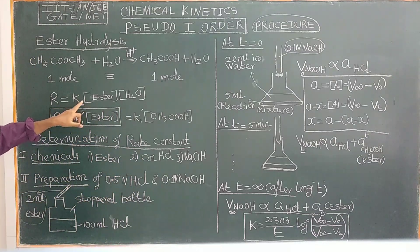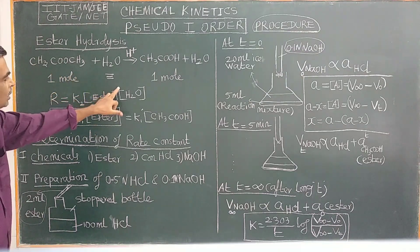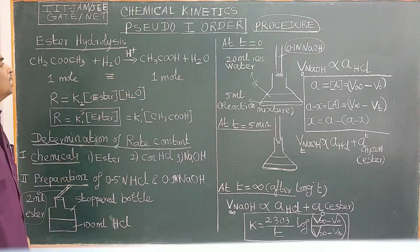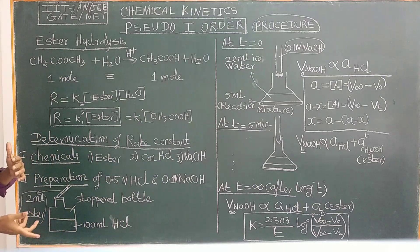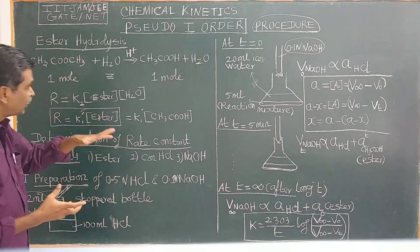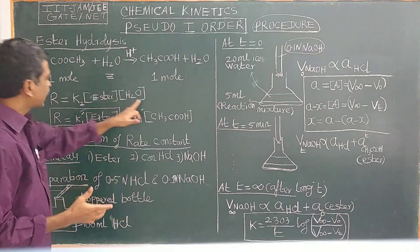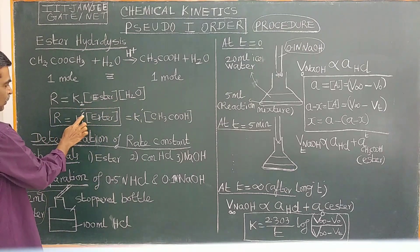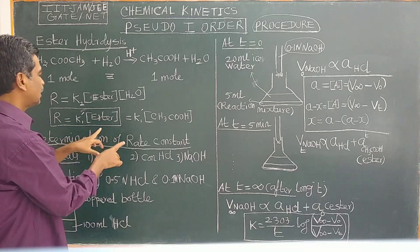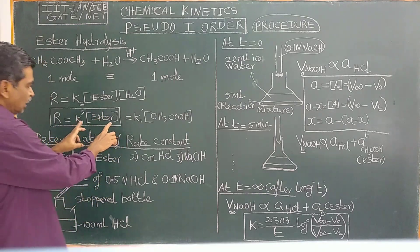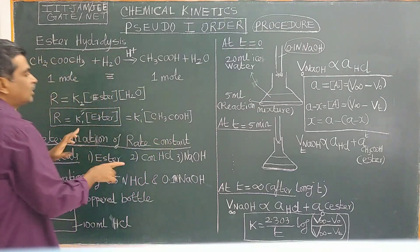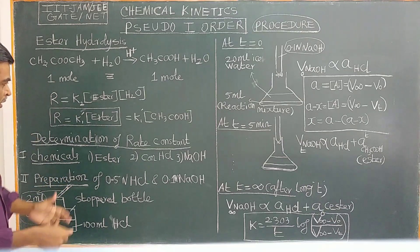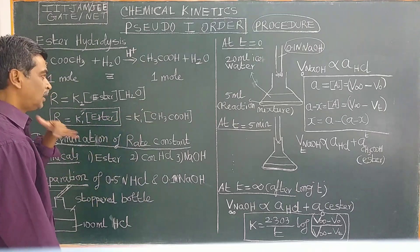The rate of the reaction is directly proportional to the ester concentration to the power 1 and the water concentration to the power 1. This is actually a second-order reaction. However, since water is in large excess — the ester and H+ are both dissolved in water — the concentration of water is assumed to be constant. Therefore, the rate of the reaction only depends upon the ester concentration, and the reaction is considered pseudo-first-order, with a new rate constant K1 prime.